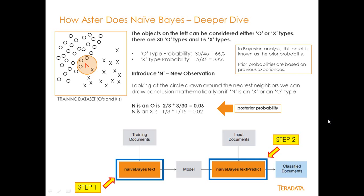Let's do a deeper dive into Naive Bayes. Imagine we have a diagram of X's and O's and we have a new observation N, and we want to determine if N is an O or an X. We have 30 O types and 15 X types. The O type probability is 30 divided by the total count of 45, which represents about 66%. The X type probability is 15 out of 45, which is about 33%.